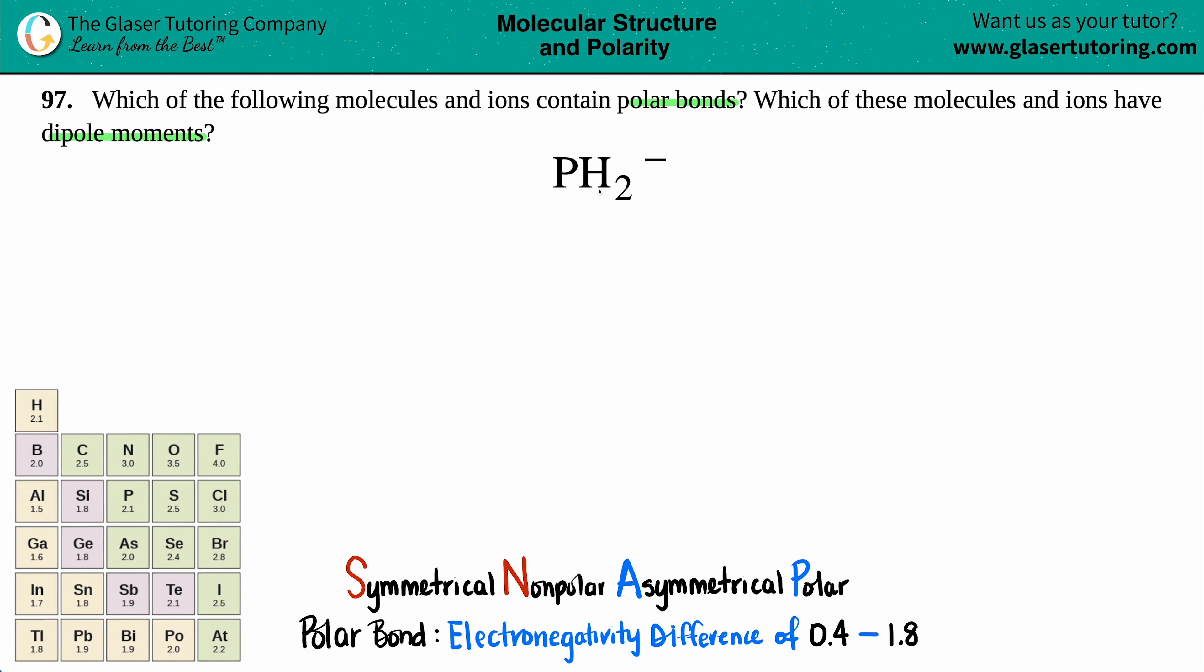This one will kind of be like a quick inversion. So you could always pause the video, write down your Lewis structure, and then see if your answer matches mine. So here we go. Hydrogen, never in the middle. So I know that phosphorus has got to be in the middle. I'll put my two hydrogens around it. And that looks pretty good to me.